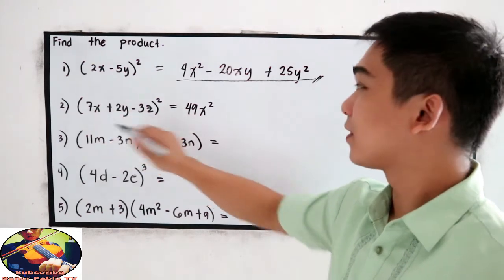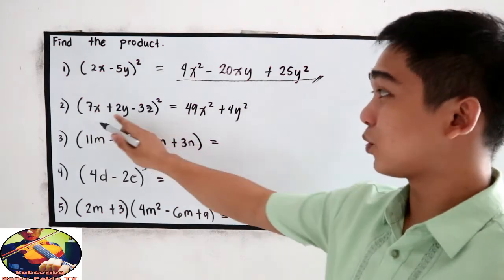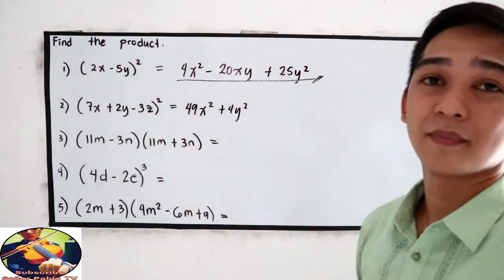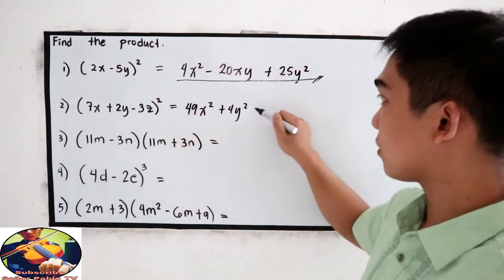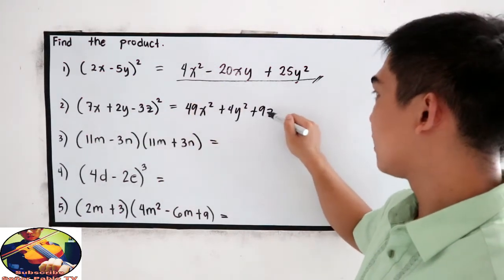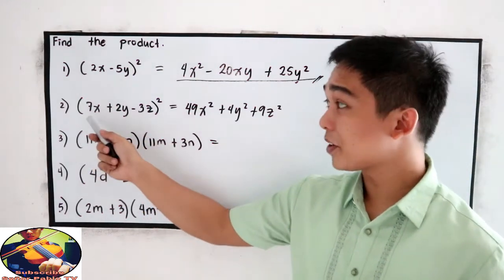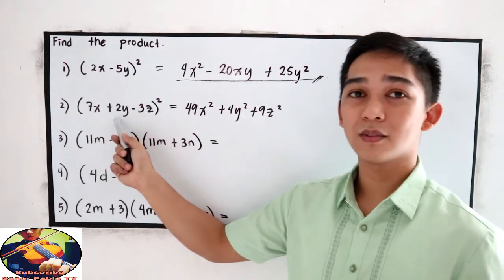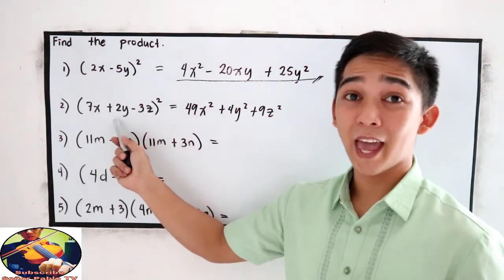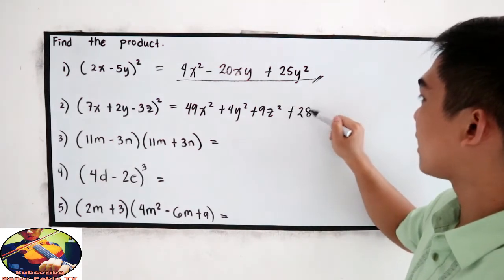Square the second term. Positive 4y squared. 2 squared and y squared. Square the third term. Negative 3 squared. So, positive 9z squared. Now, multiply the first term and the second term. 7 times 2, that is 14xy times 2. Positive 28xy.